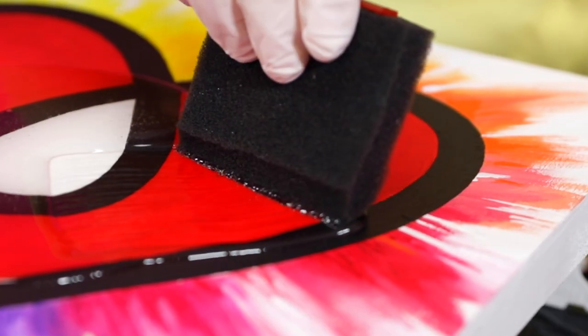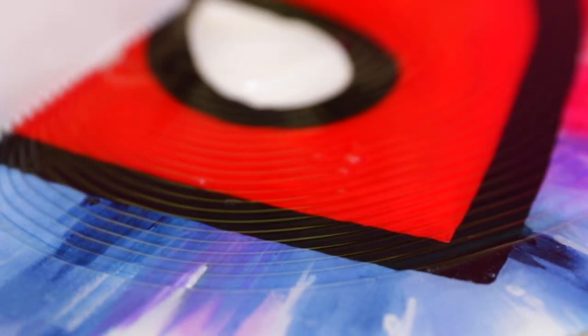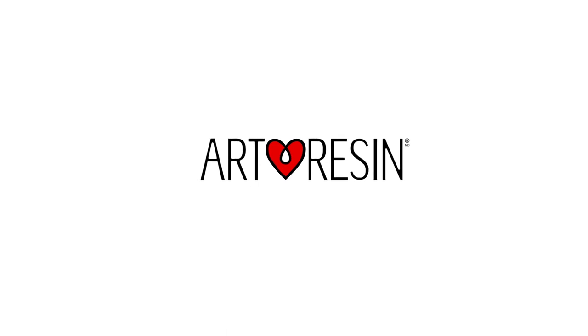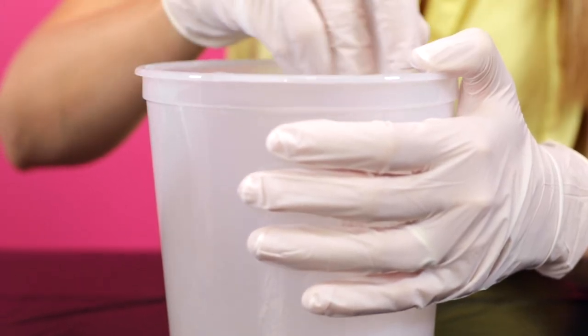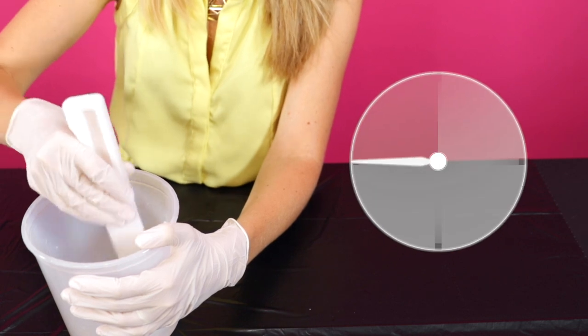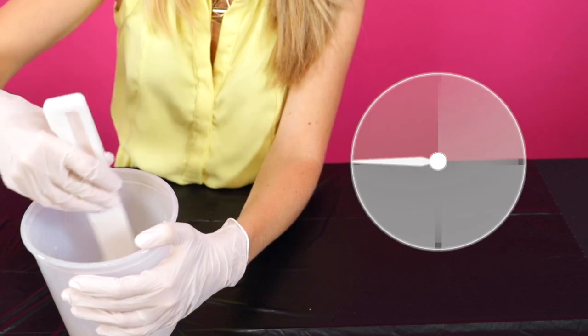In this video we demonstrate how to pour and spread your art resin. Once you've mixed both the resin and hardener together, you'll have about 45 minutes of working time to spread it before it starts to cure.